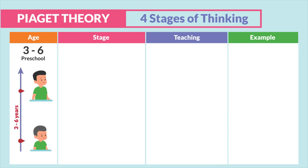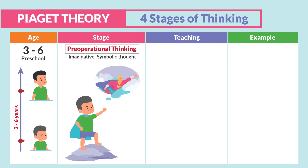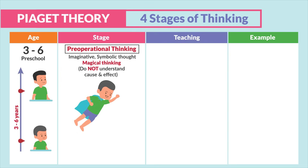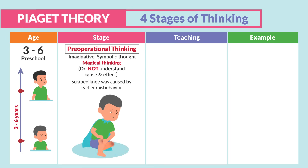The next age group is three to six-year-olds — our preschoolers. This stage is defined as pre-operational thinking. These children are very imaginative with symbolic thought and magical thinking. They do not understand cause and effect. For example, they may think scraping their knee was caused by earlier misbehavior.